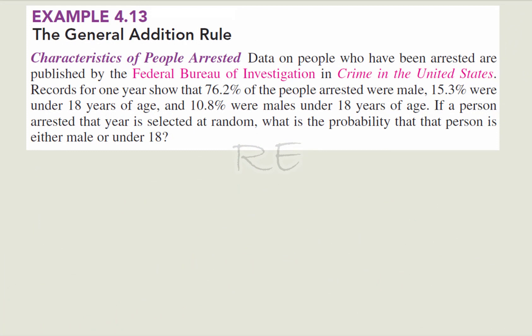Now we're dealing with the characteristics of people arrested. And we have 76.2% were male, 15.3% were under the age of 18 years old, and 12.8% were males under the age of 18 years of age. So P of X equal to male is 76.2%.